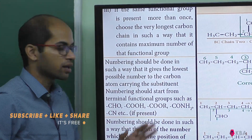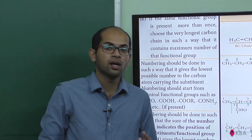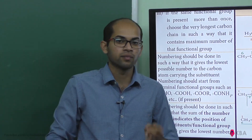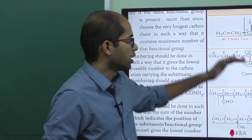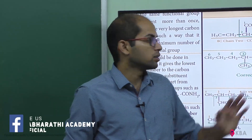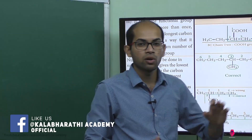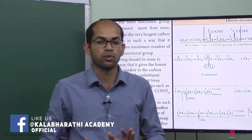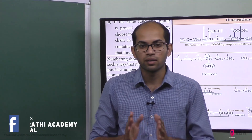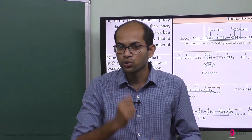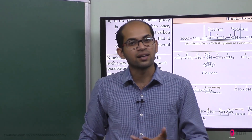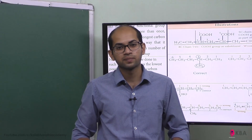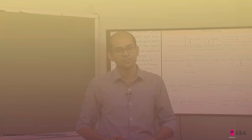So, if you have a question, you should consider the first functional group reference. If you have a functional group, try to give it the lowest number. If you have two different groups, the lowest number applies. This is the longest chain rule. If you have any questions, please go to the comment section. Thanks for watching, students. Thank you.